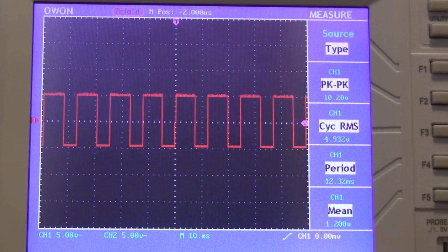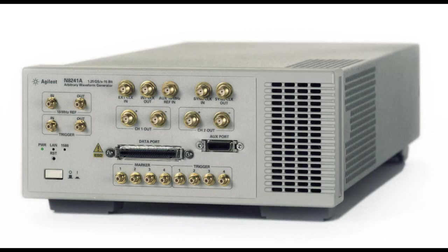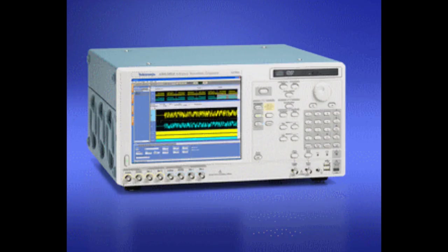A typical function generator will let you generate sine waves, square waves, and triangle waves. Some really expensive function generators, called arbitrary waveform generators, will allow you to generate any waveform you want with any shape you want.